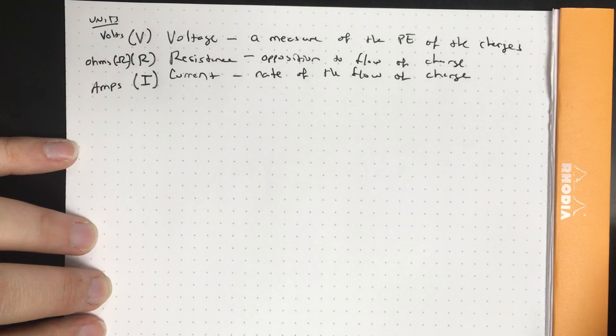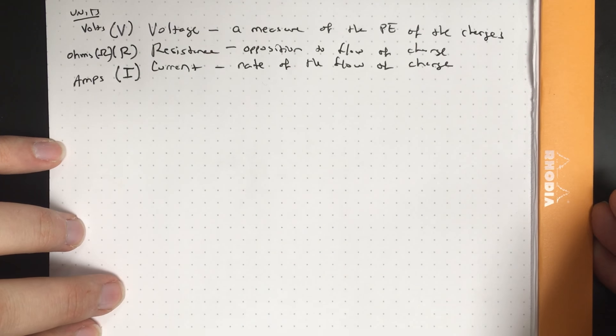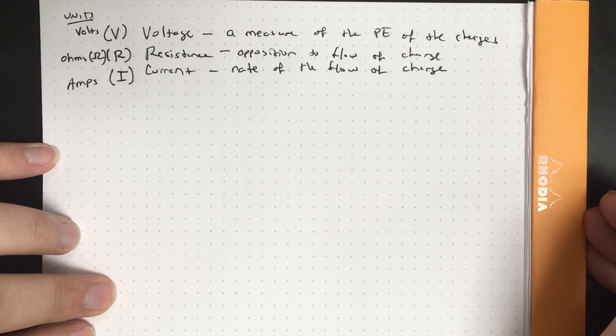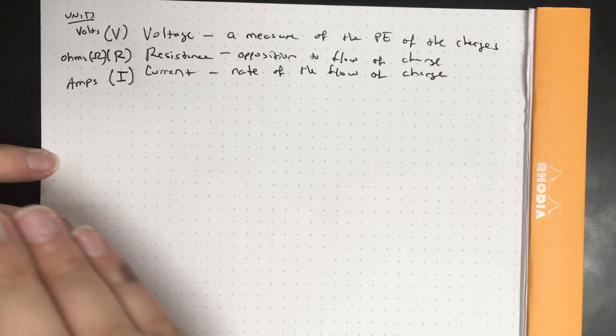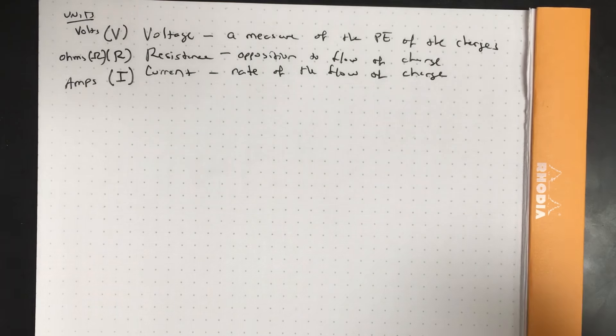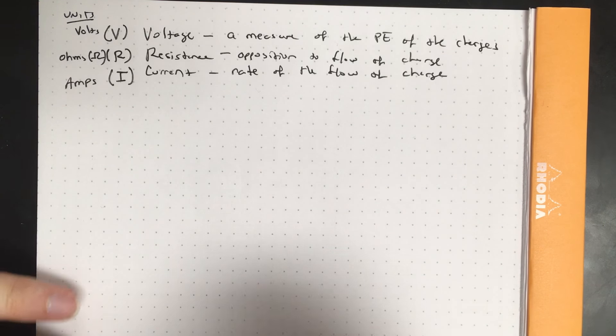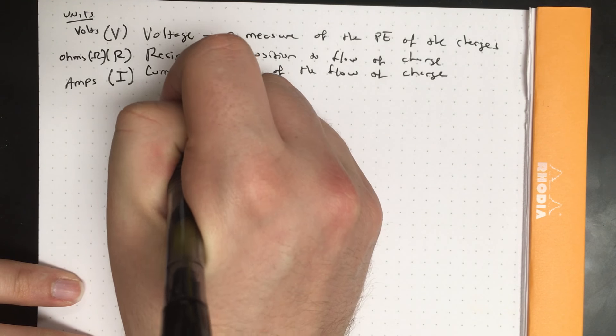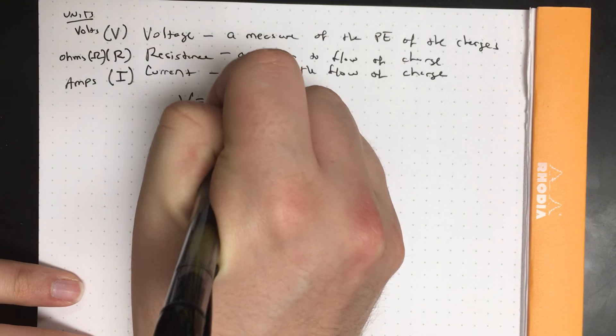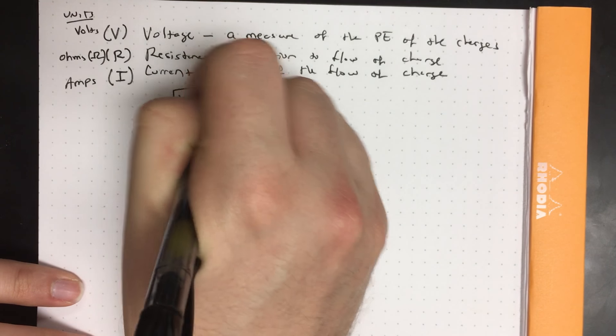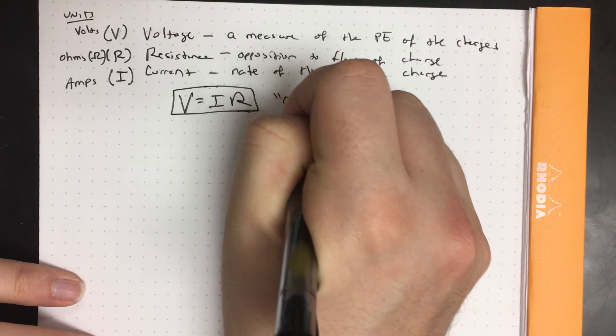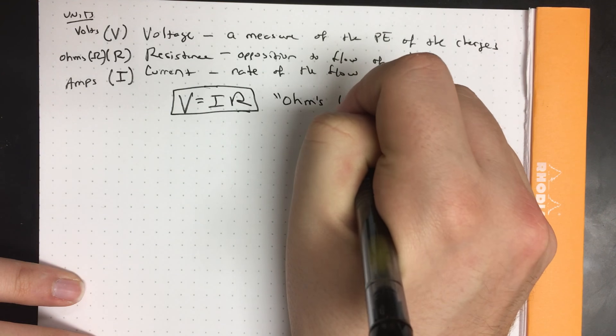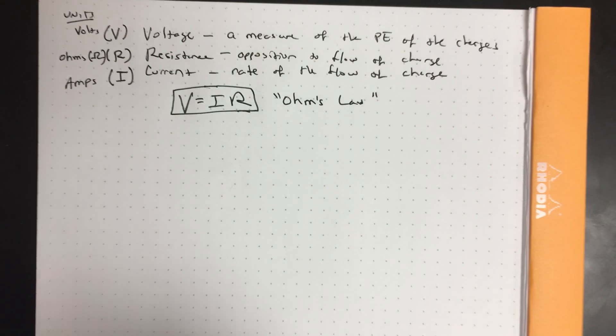At the very end of yesterday we learned that in the circuit, if you have more voltage you get more current, if you have more resistance you get less current, and we summed that up in the equation V equals I R, which is called Ohm's Law. That's the equation that you are going to be using to solve the problems today. It's a basic three variable equation.